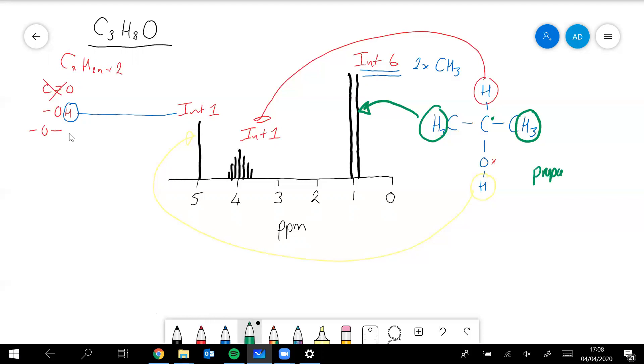Let's just have a little look. The only other thing it could have been I suppose is propan-1-ol. Let's just have a look at what the spectrum for propan-1-ol, we'll try and predict what that would look like.